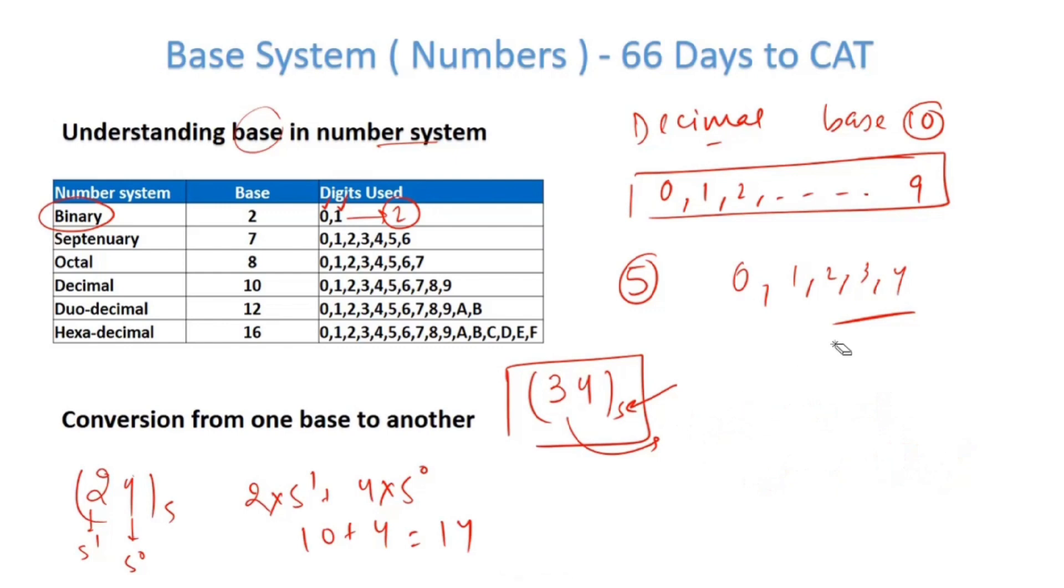For example, let's say I have a number 19. I have to convert it to base 5. Right now it's in decimal. I have to convert it to base 5. I divide it by the number 5 and I will take quotient and remainder. So 5, 19. If I divide, the quotient will be 3, remainder will be 4. Can I do any further division? The answer is no. So I can write 19 as 3, 4.